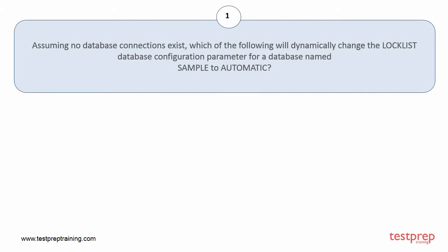Question number 1. Assuming no database connections exist, which of the following will dynamically change the locklist database configuration parameter for a database named Sample2Automatic?